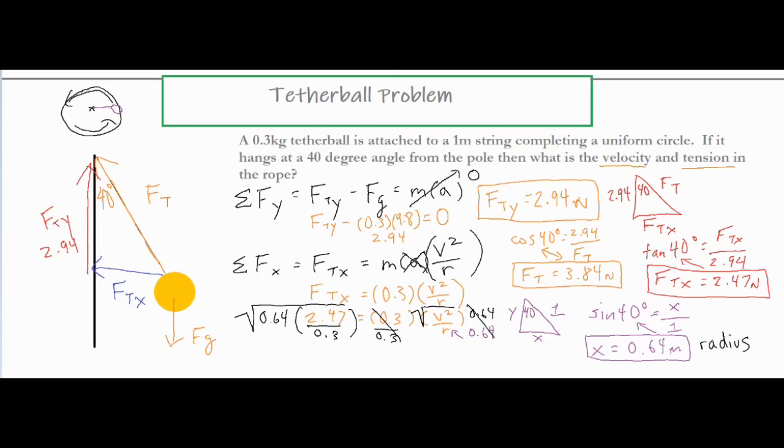In my calculator, I would go ahead and put 2.47 divided by 0.3, and then take that number, multiply it by 0.64, and then square root it. And that is going to leave me with my final answer. My final answer comes out to be about 2.30 meters per second.